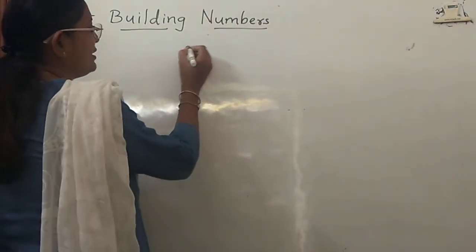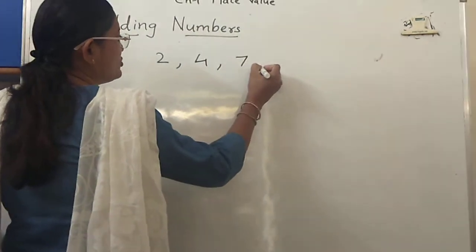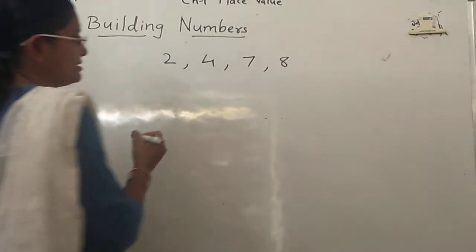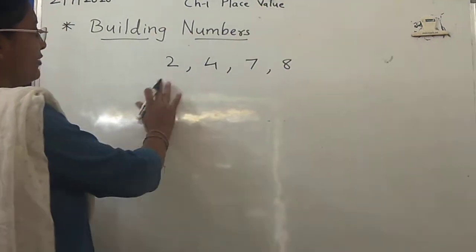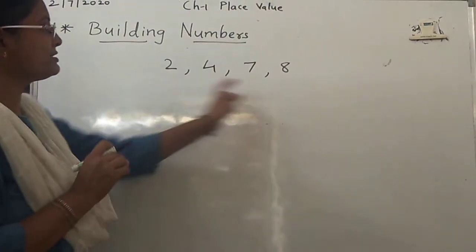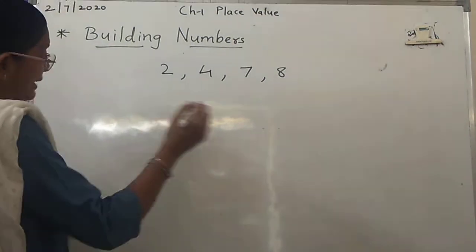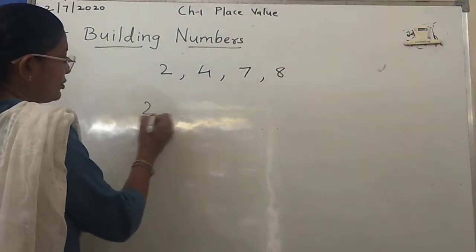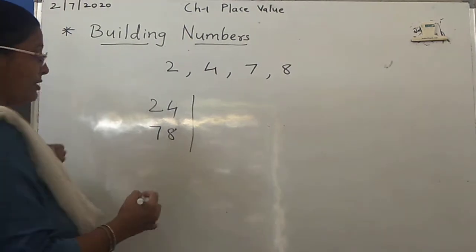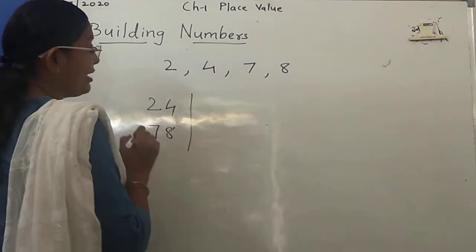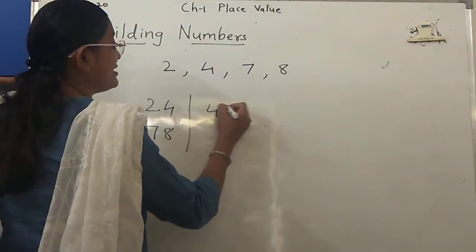Let me give you an example. If we have these 4 digits — 2, 4, 7, 8 — these 4 digits are there with us. If I want to build a number from these digits, I can build 24, I can build 78 — this is a 2-digit number. If I have to build a 3-digit number, I can build 478.